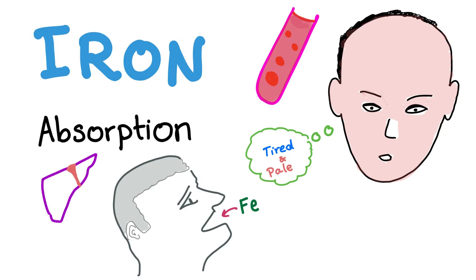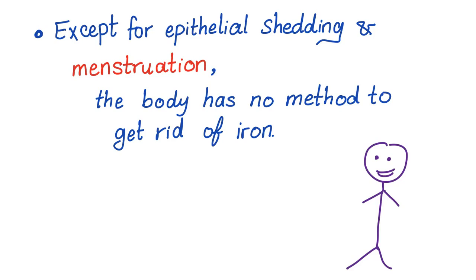But first, to understand iron studies, we need to understand iron absorption. By iron studies, I mean things like serum iron, TIBC, ferritin, percent saturation. Iron studies is one of the most confusing topics. I'd like to make it easy. You have to know that except for epithelial shedding and menstruation, the body has no method to get rid of iron. So iron absorption is heavily regulated.